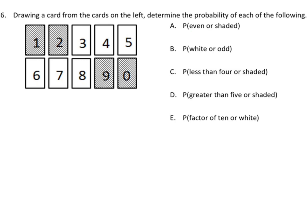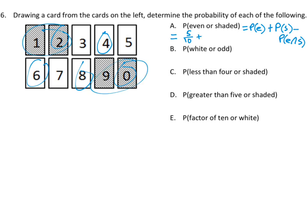You need to count how many cards are even. Remember, if it's 'or,' we want: probability of even plus probability of shaded, minus the probability that it's even and shaded. There are five even cards out of 10, so that's 5/10. The probability of shaded is four cards, so 4/10. We subtract the cards that are both even and shaded — that's two of them — so we subtract 2/10. That gives us 9/10 minus 2/10, which is 7/10.